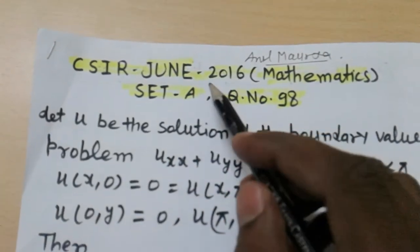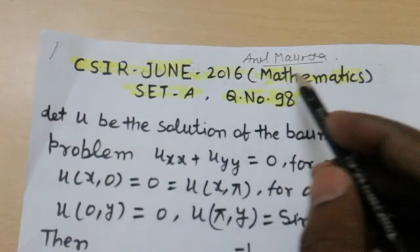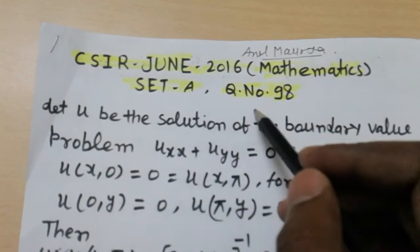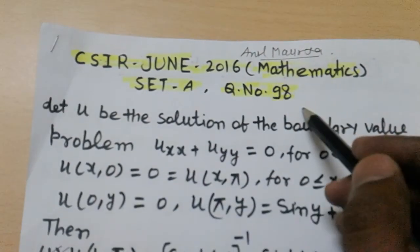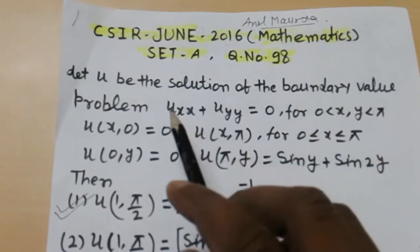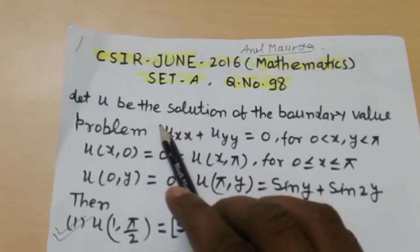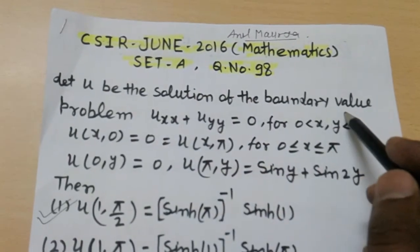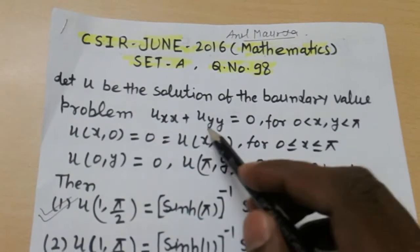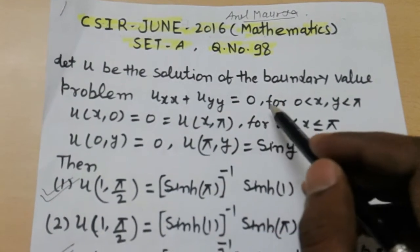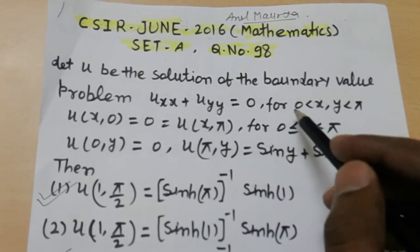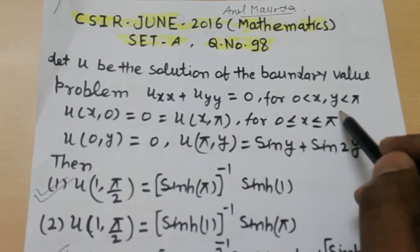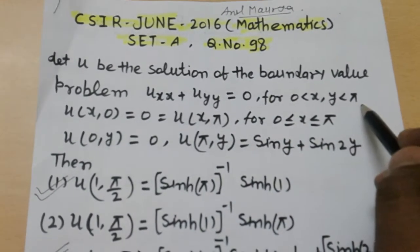CSIR June 2016, subject Mathematics, equation number 98. The equation given: let u be the solution of the boundary value problem where u_xx plus u_yy equals 0, for 0 less than x and y less than pi.